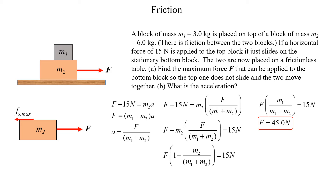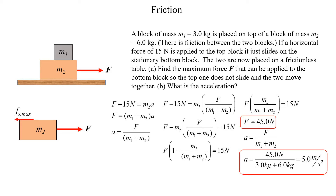Since the two blocks move together, force F accelerates both m1 and m2 with the same acceleration. So F equals the sum of m1 and m2 times the acceleration, giving acceleration equals the applied force over the sum of the two masses. Plugging that acceleration into the first equation, we get F minus 15 Newtons equals m2 times F over (m1 plus m2). Solving for F, we get F equals 45 Newtons. So our applied force can only be up to 45 Newtons — at 45 Newtons or greater, m1 will slide.